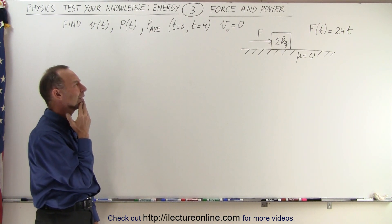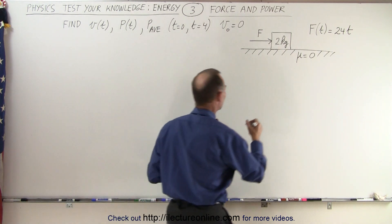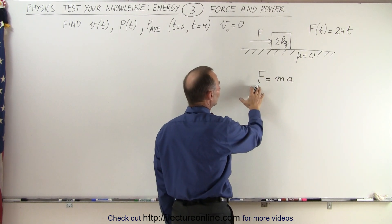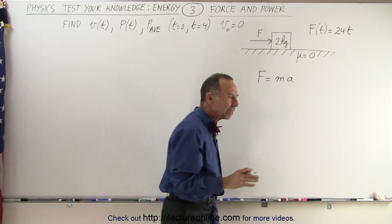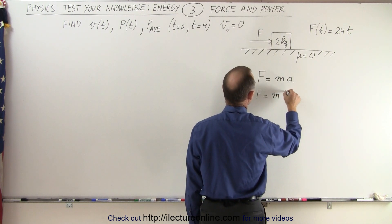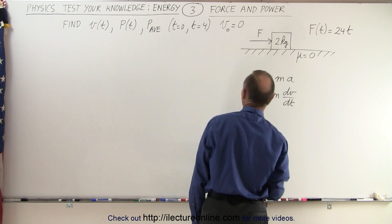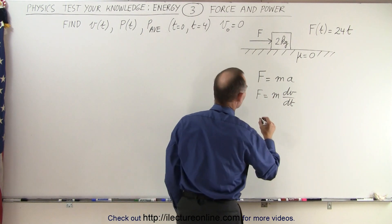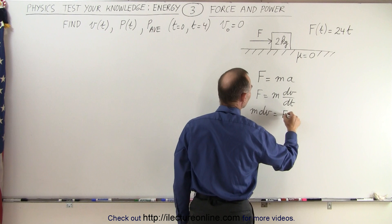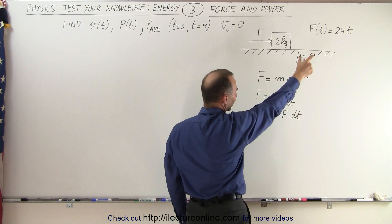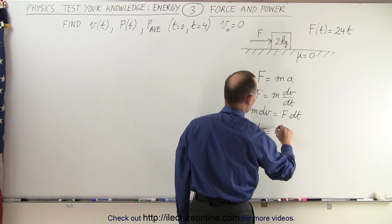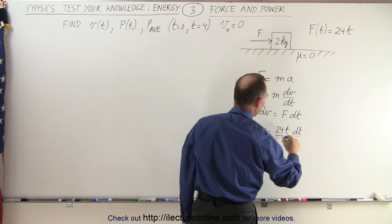How do we do this? Well, let's start out with F equals MA — that's usually a good place to start. Realizing that the force is a variable force, acceleration can be written as the change in velocity as a function of time. So we can say that F is equal to M times dV/dt. Because we're trying to find the velocity, we can write that M dV is equal to F times dt. Replacing F and dividing both sides by M, we get dV is equal to 24t dt divided by M.